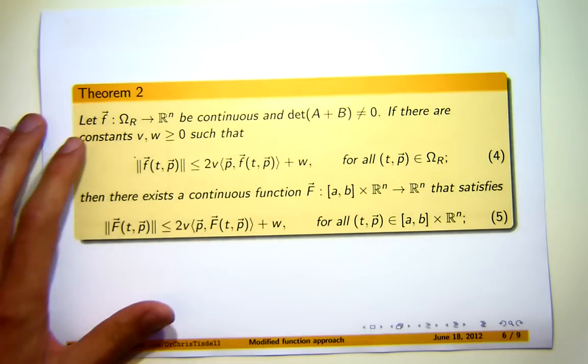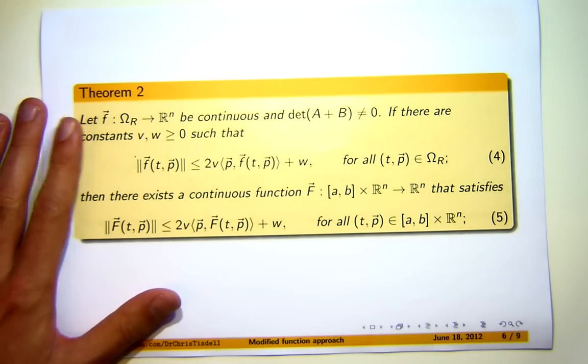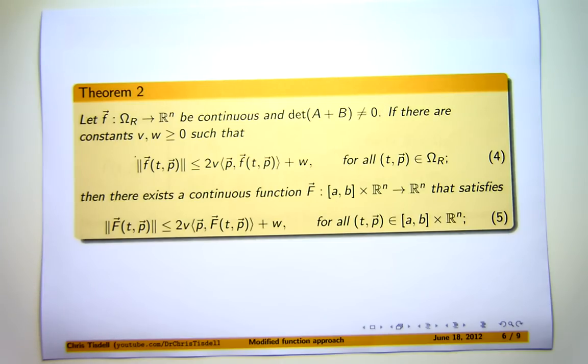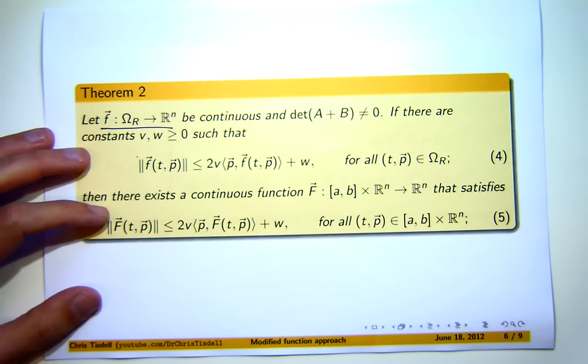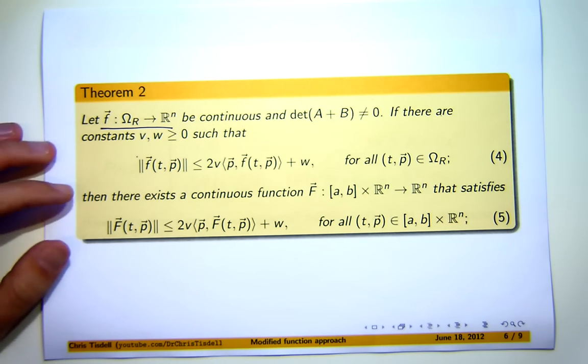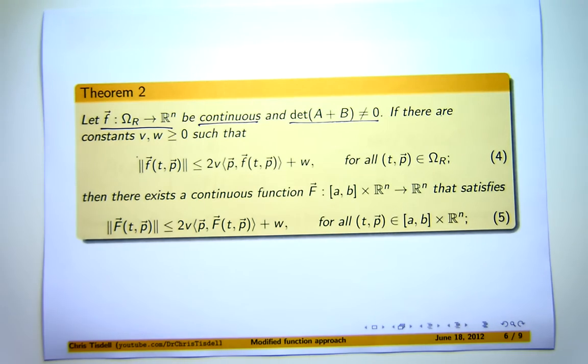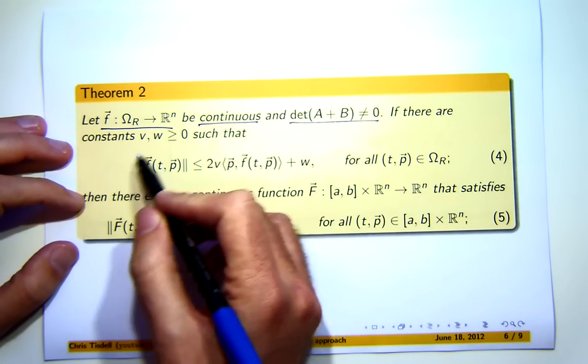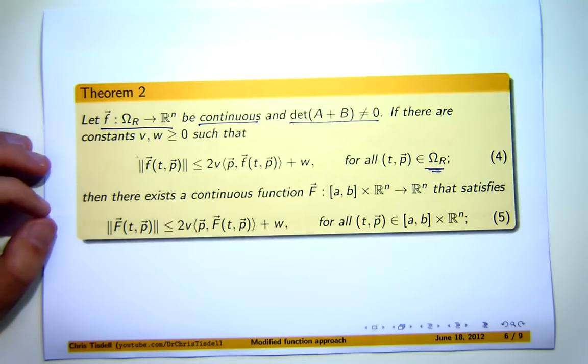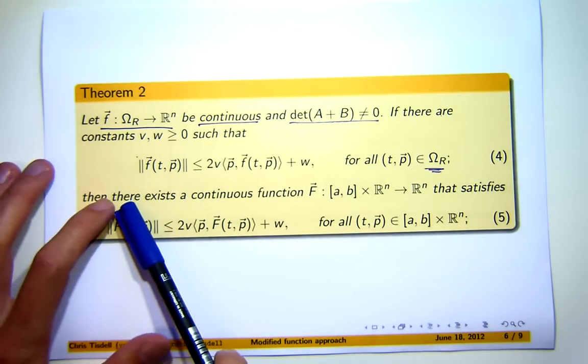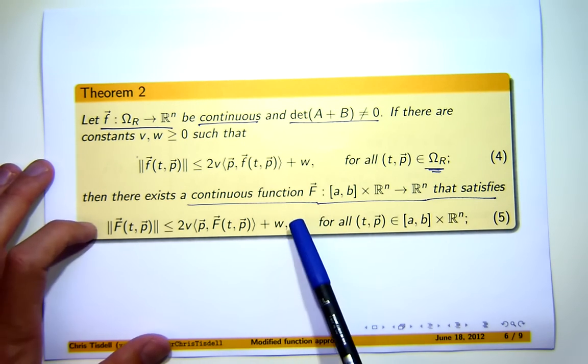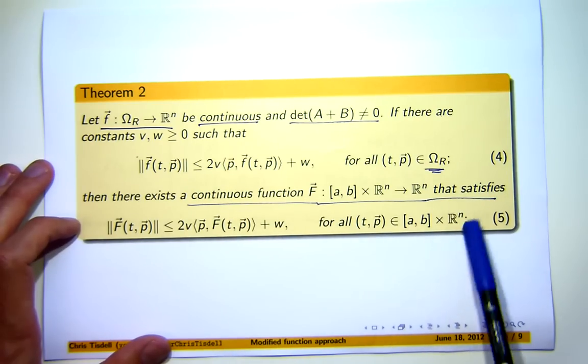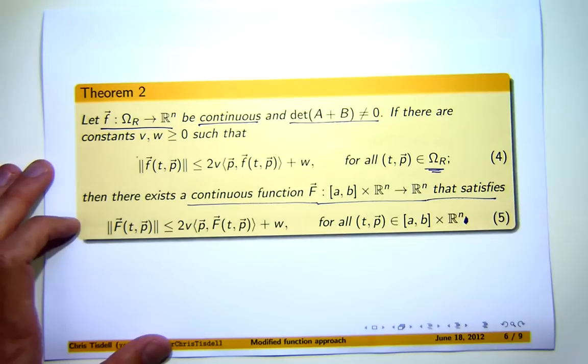Now, it won't be clear from a first view of why this result is important, but when I present theorem three, that's when the real value of this theorem will be apparent. So, suppose I've got a little f that's defined on this subset of [a, b] cross R^n. Suppose it's continuous there, and this determinant condition satisfied. If little f satisfies an inequality like this on this smaller set, then we can construct a continuous function, big F, that's defined on this whole set that satisfies a similar inequality on this whole set.